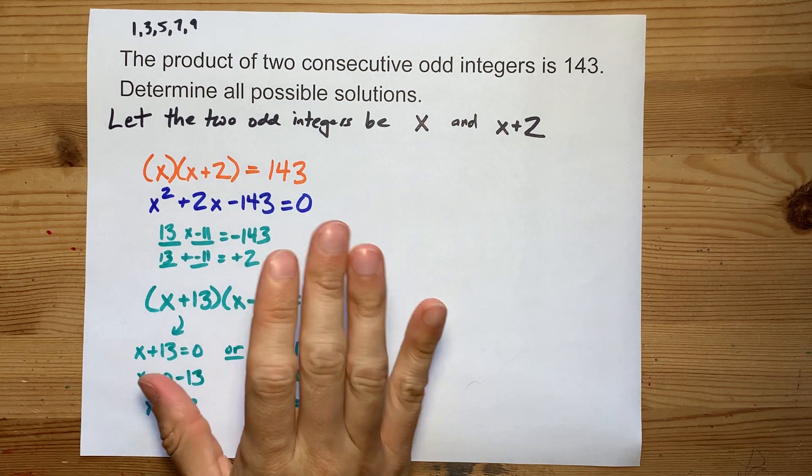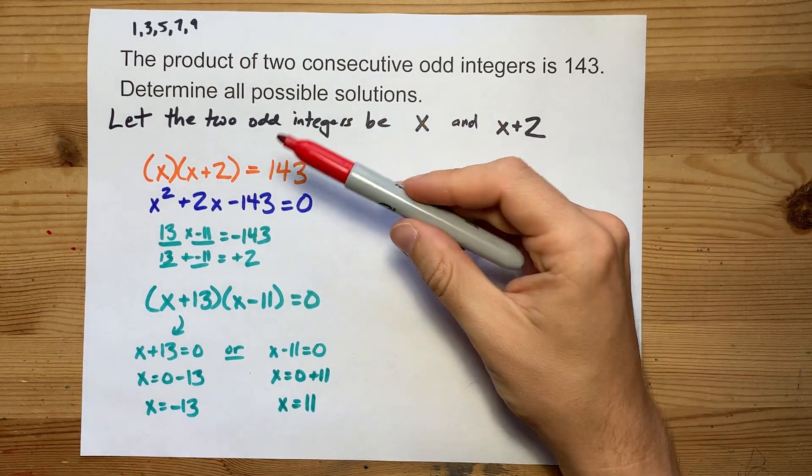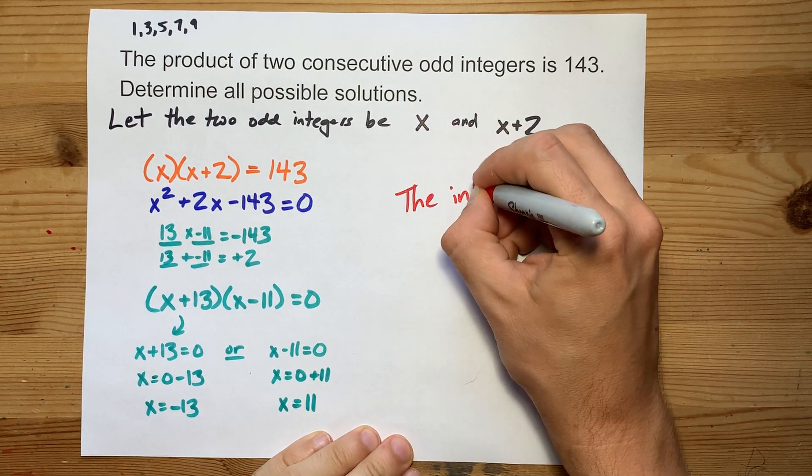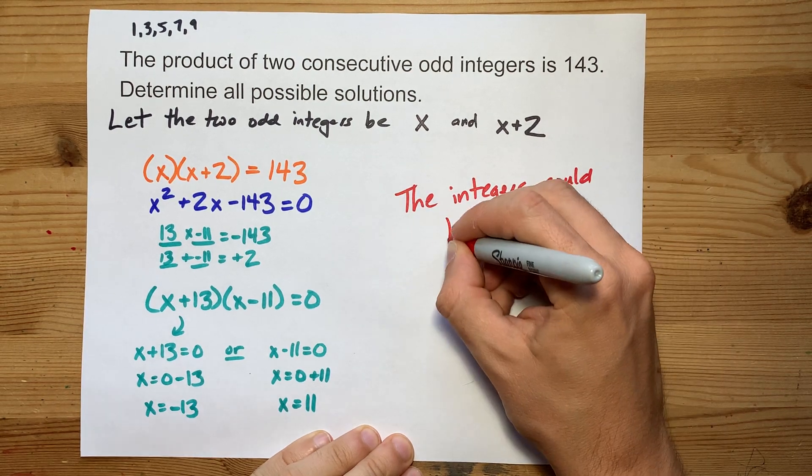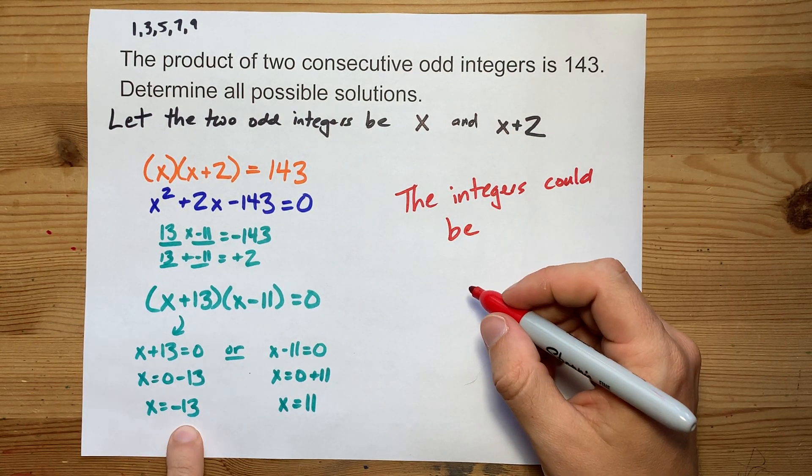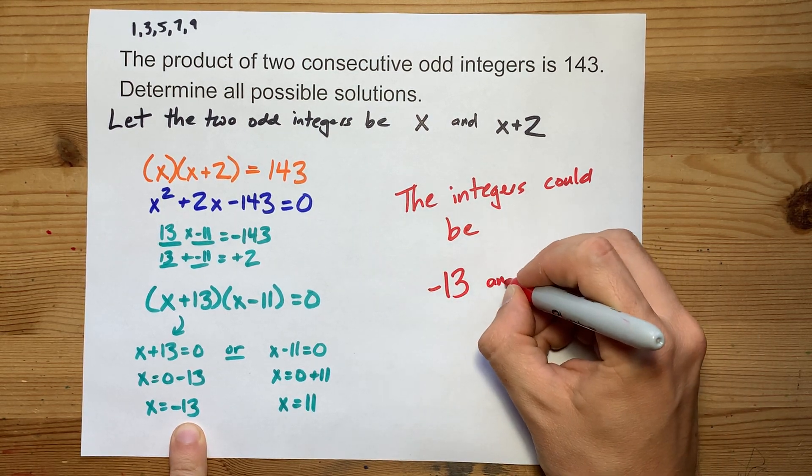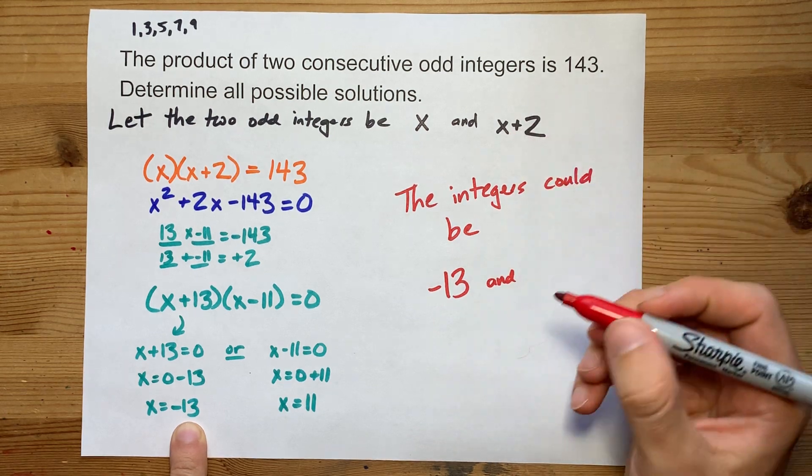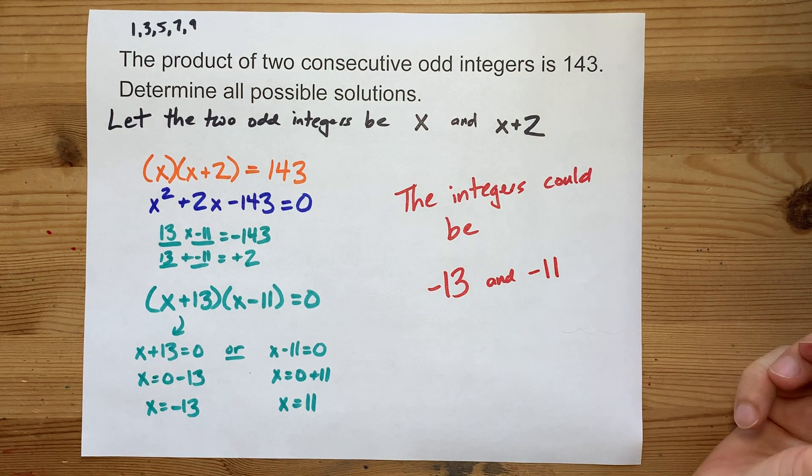Now, I haven't truly solved yet, because we want to know what the two odd integers are. The integers could be, option one is that the first integer is negative 13, and the next one is whatever that is plus 2. Adding 2 to that gives me negative 11. Cool.